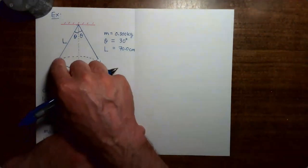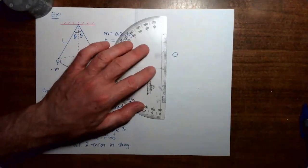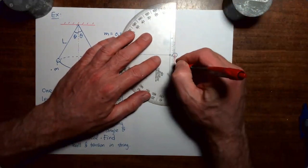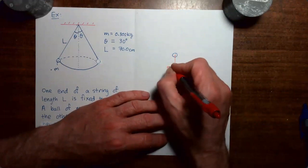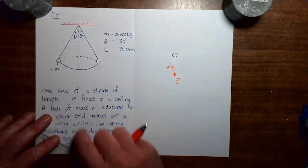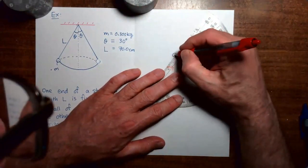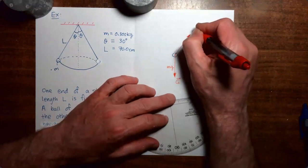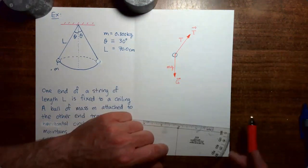We're going to look at the situation where the mass is at the leftmost point on the circle. As usual, I'll start by drawing in the gravitational force, which would point right down, with magnitude mg. Then we have the tension force vector directed along the direction of the string, with magnitude T. So that's all of the force vectors.